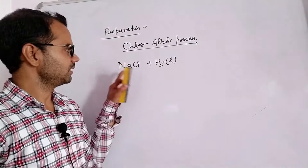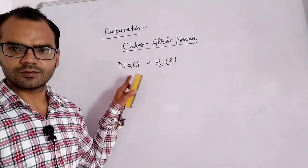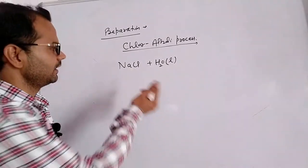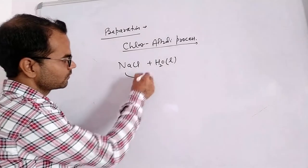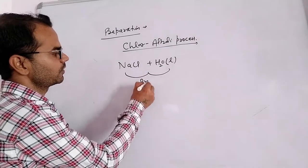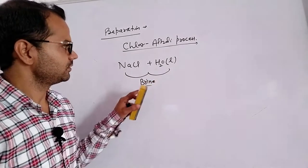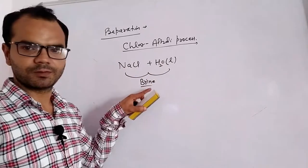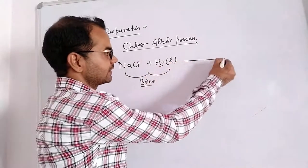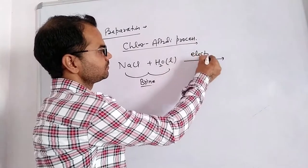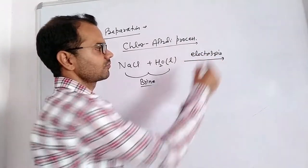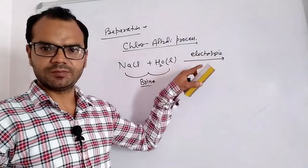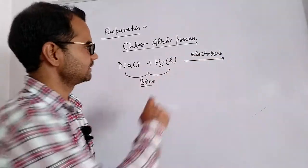In this process, we take an aqueous solution of sodium chloride — sodium chloride is a common salt. An aqueous solution of sodium chloride is called brine. On electrolysis, the process takes place in a special chamber called an electrolytic cell.